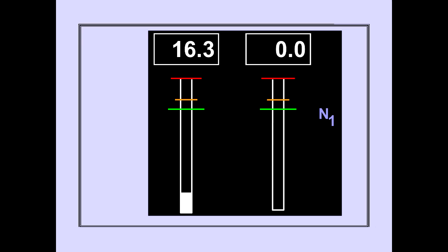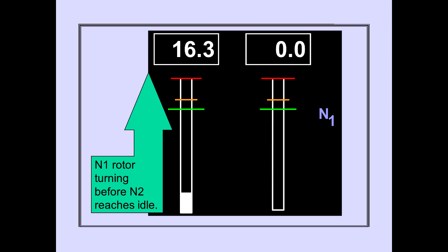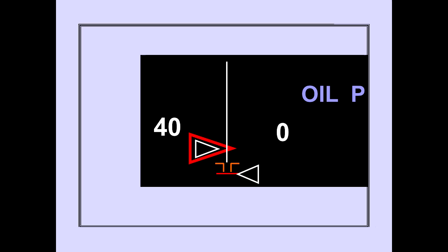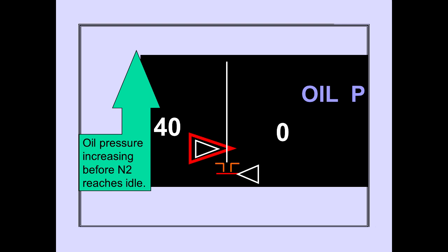Before N2 RPM reaches idle, N1 RPM begins to increase, indicating that the N1 rotor is turning properly. Before N2 RPM reaches idle, oil pressure also begins to increase, indicating the oil system is operating and lubricating the engine.